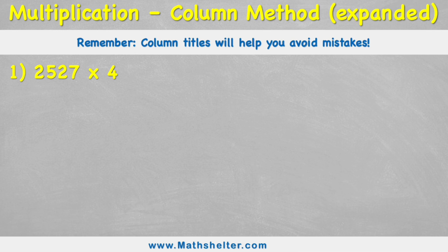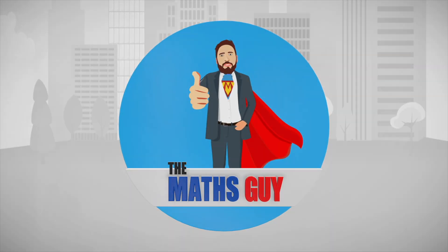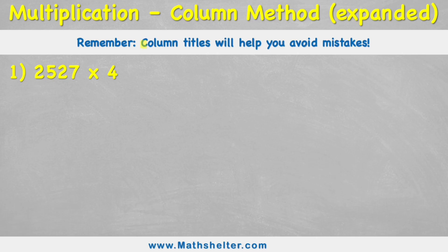So let's waste no time, let's jump into it. We're going to remember that putting our column titles will help us avoid mistakes. So let's do that first of all. We can see our first example here says 2,527 times 4. So I have 1s, 10s, 100s and 1000s in this case.